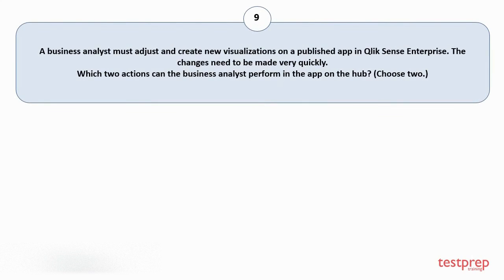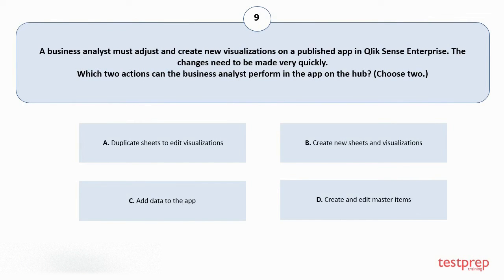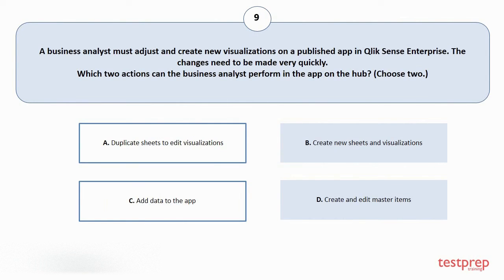Question number 9. A business analyst must adjust and create new visualizations on a published app in Qlik Sense Enterprise. The changes need to be made very quickly. Which two actions can the business analyst perform in the app on the hub? Choose two. Your options are: A. Duplicate sheets to edit visualizations. B. Create new sheets and visualizations. C. Add data to the app. D. Create and edit master items. The correct answers are option A and C.